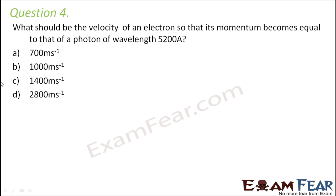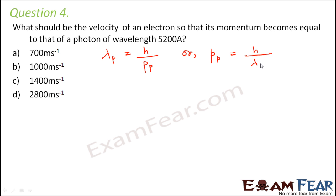Question number 4: What should be the velocity of an electron so that its momentum becomes equal to that of a photon of wavelength 5200 angstrom? For the photon, the wavelength is given by h by momentum of the photon, so momentum of the photon equals h by lambda photon.